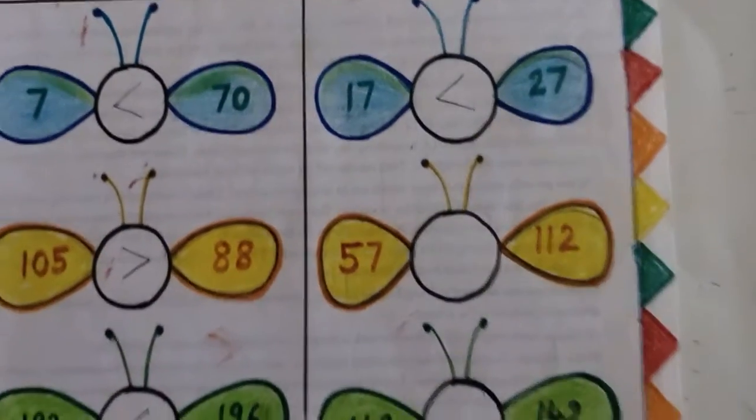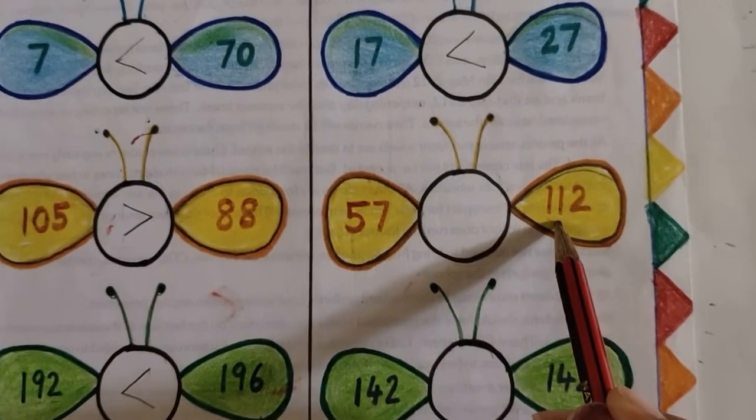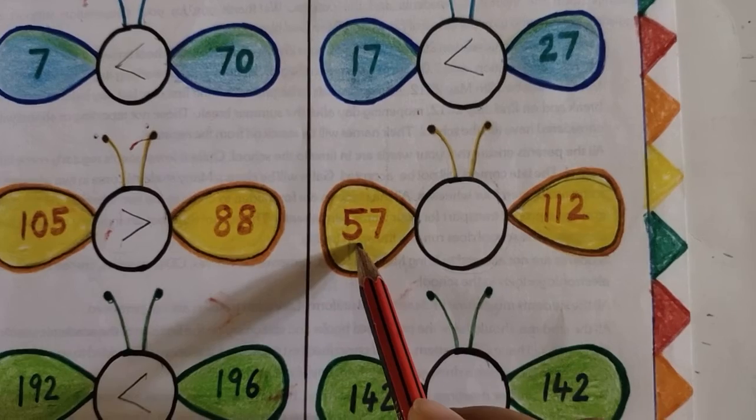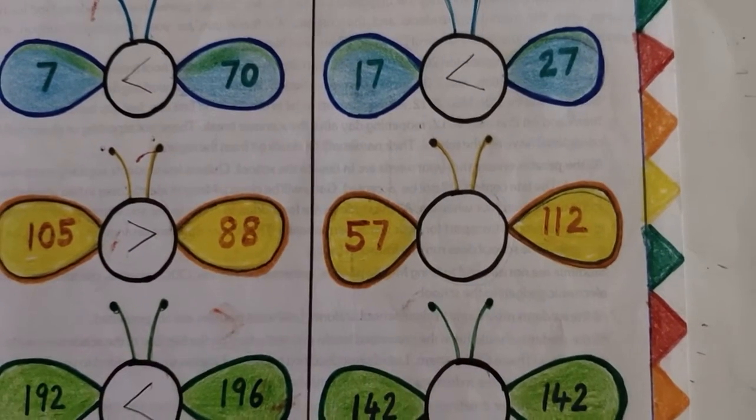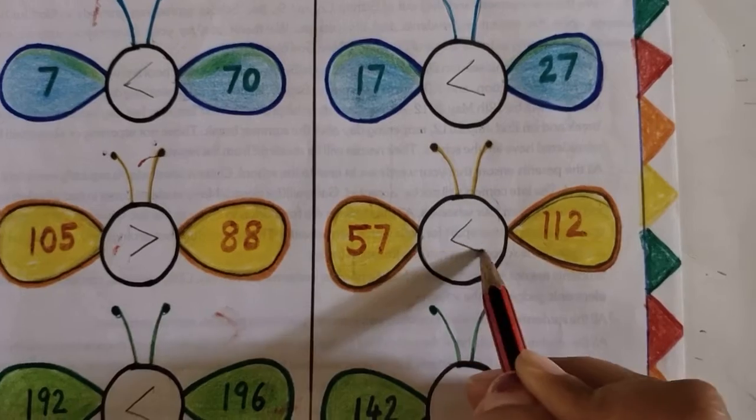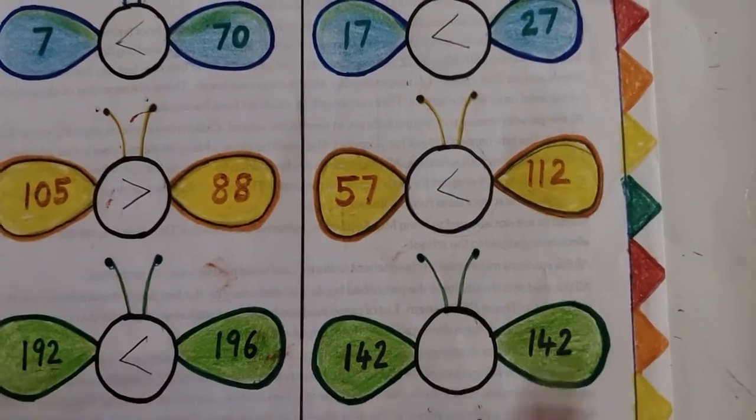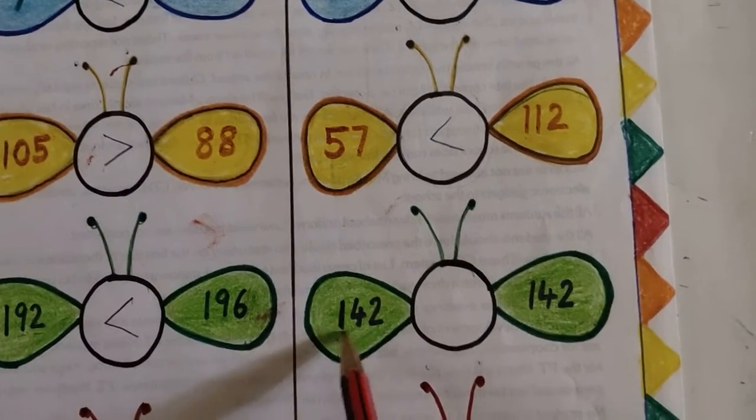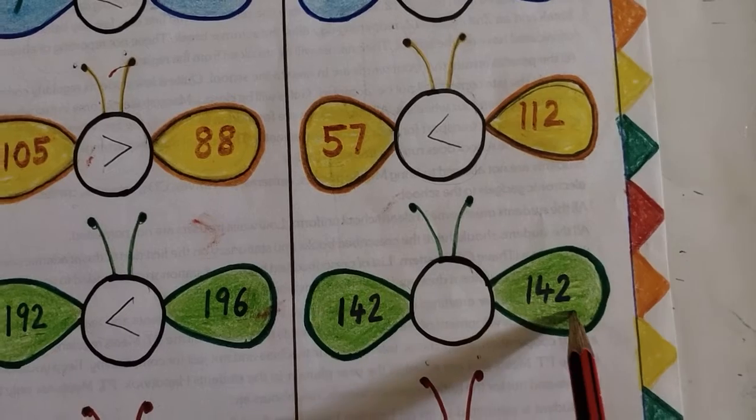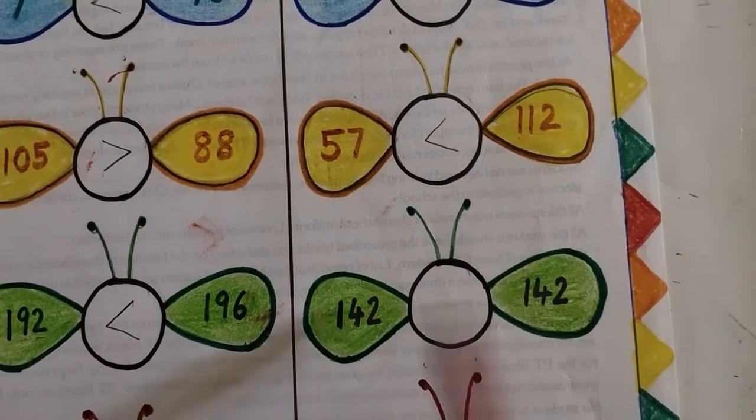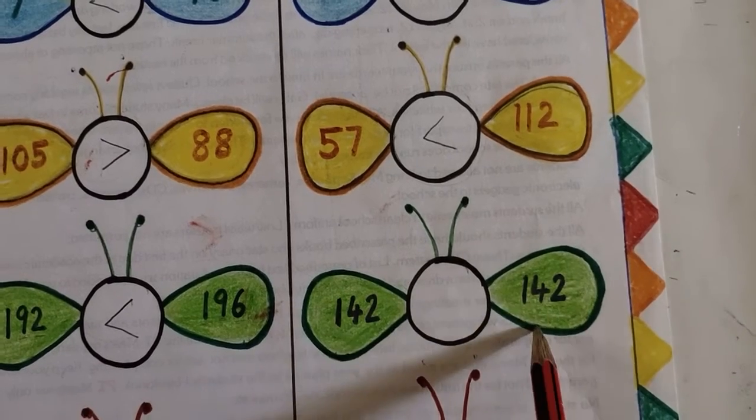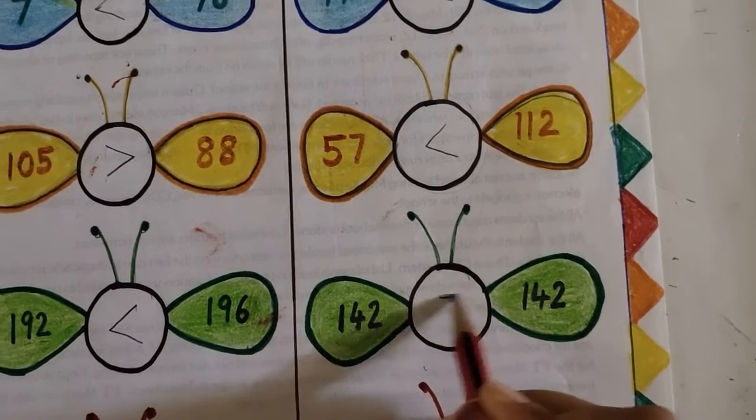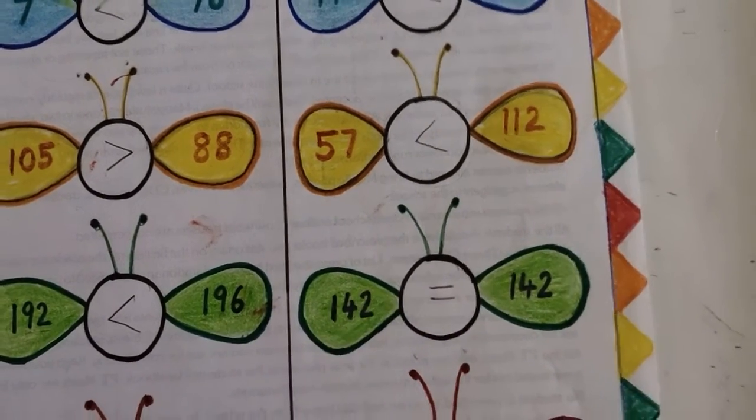We will put this sign. Again, 112 and 57. So 3 digit number and 2 digit number, which one is greater? 3 digit number, so this sign. Again, 142 and 142. These both are equal because here also we have 142 and here also 142, so we will put equal to sign.